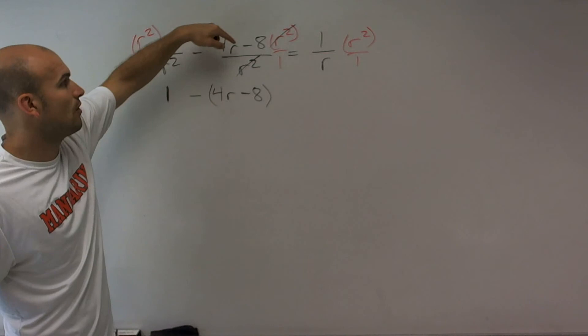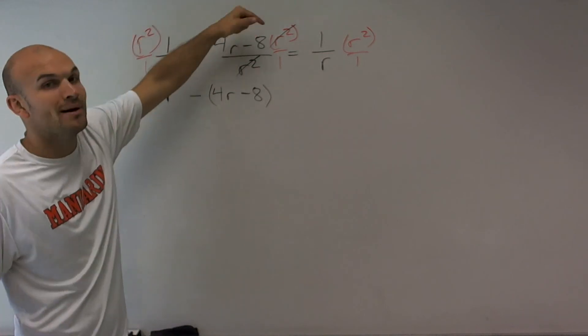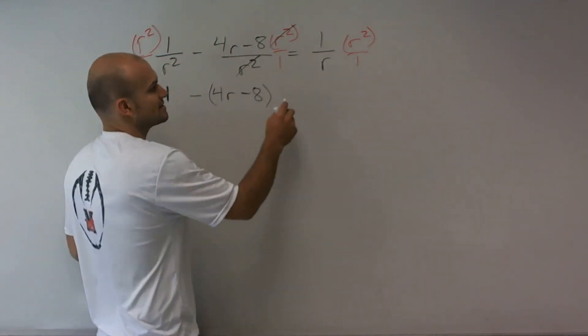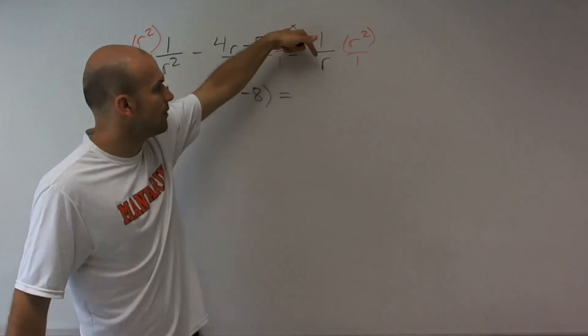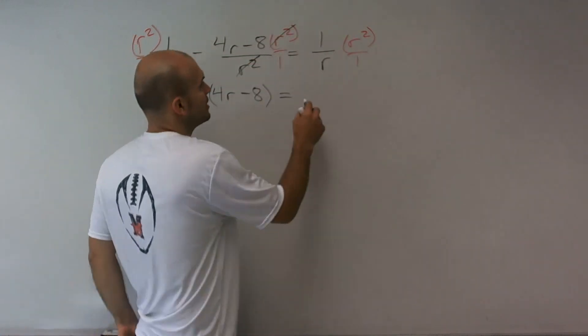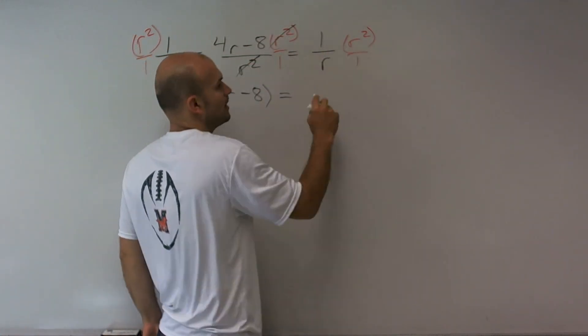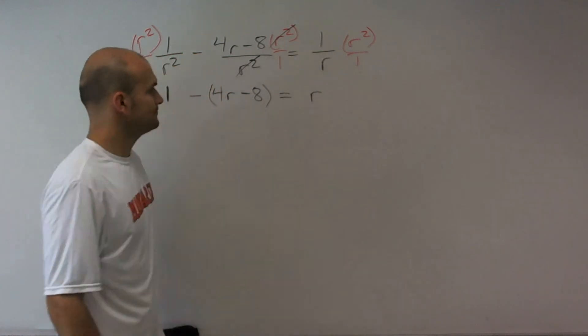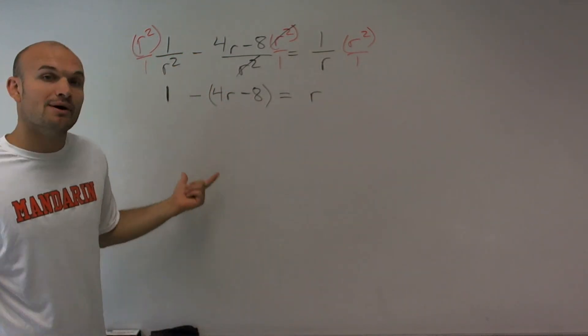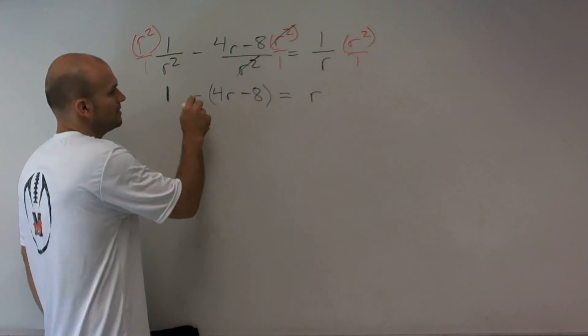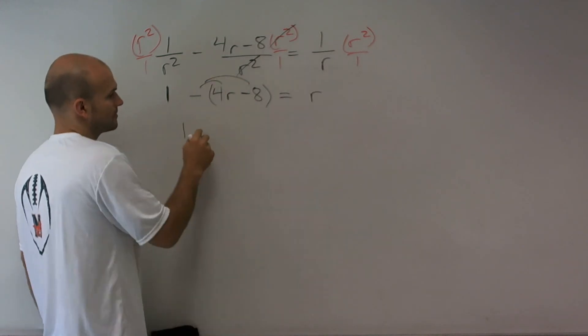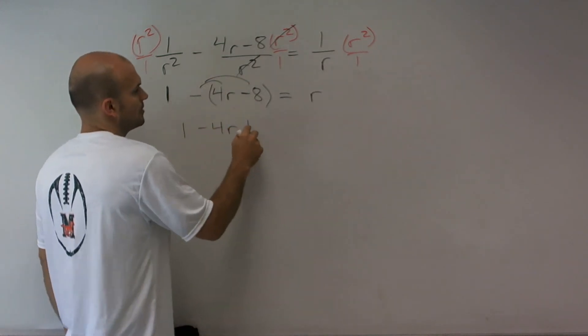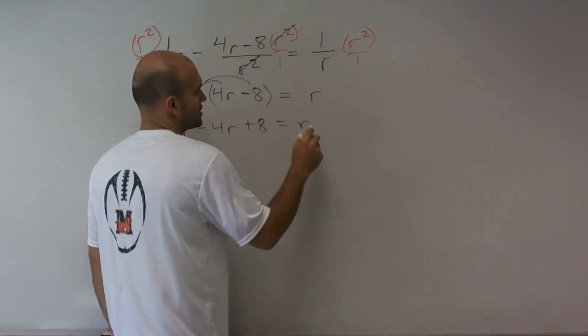It's not negative 4r, it's negative 4r minus 8, so that's why I put it in parentheses, equals—now r divides into r squared, r times 1 is 1. So now I have a linear equation that I need to solve for. I have 1, distributed property, minus 4r plus 8 equals r.